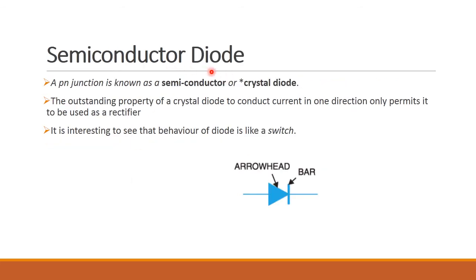Next, semiconductor diode, that is our P-N junction diode. It is also called a crystal diode. The important property of a semiconductor diode is that it acts as a rectifier, meaning it will allow current to flow in only one direction. This is a very important property. The diode also acts as a switch. The anode is the P-type and the cathode is the bar side — anode is positive and cathode is negative.